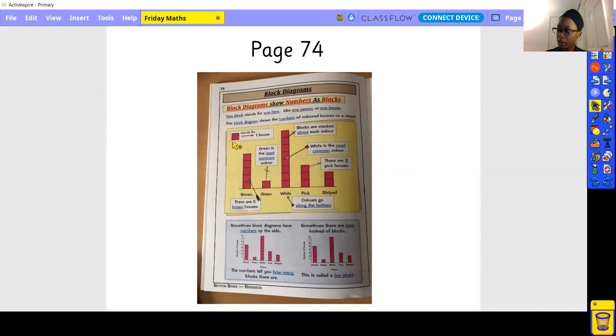Blocks are above each color. Okay, so we can see our selection of colors along here and the information that goes with it. So we can see, for example, starting down below, there are five brown houses. We can see green is the least common color, white is the most common color. There are three pink houses, various bits of information we can see related to the block diagram.